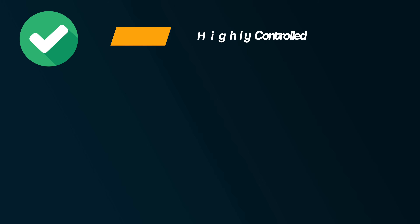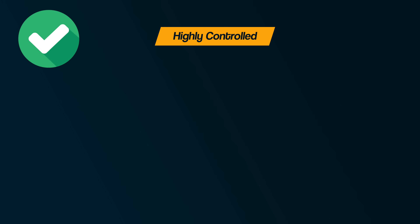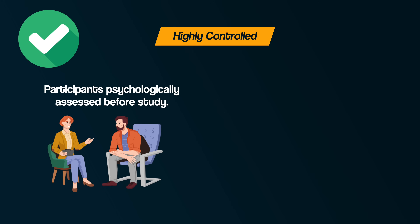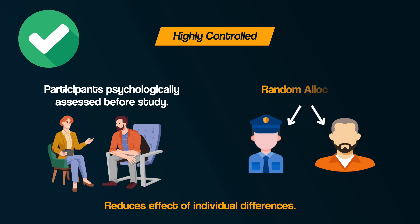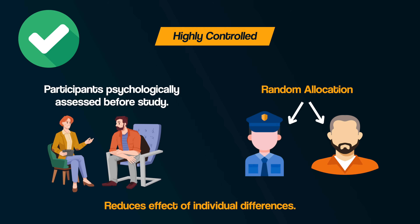One key strength of the Stanford Prison Experiment was the high level of control over variables. Participants were carefully screened to ensure they were emotionally stable and free from psychological issues, reducing the risk of individual differences affecting results. Random allocation to prisoner or guard roles helped reduce participant bias, ensuring behavioral differences were likely due to assigned roles rather than personality traits. As a result, the study had good internal validity.